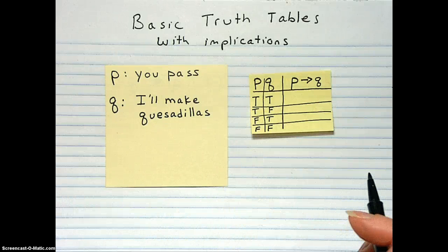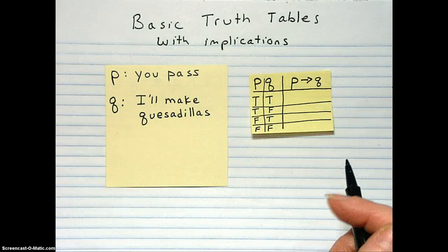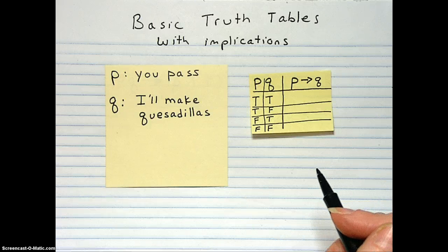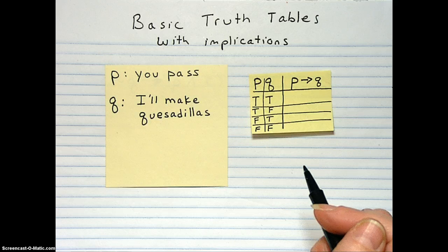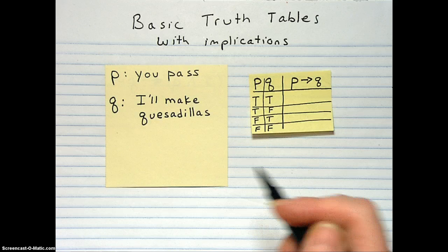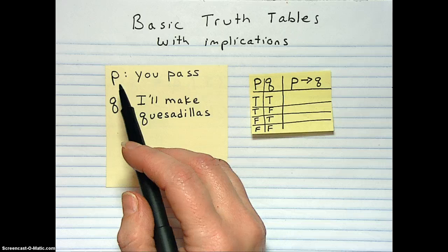Okay, more truth tables, this time with implications. We're going to work with different statements. Instead of love and marriage, we're going to talk about food, which is really important, and classes.